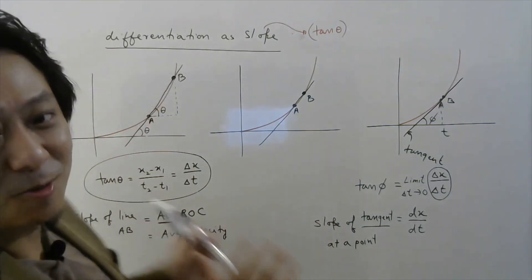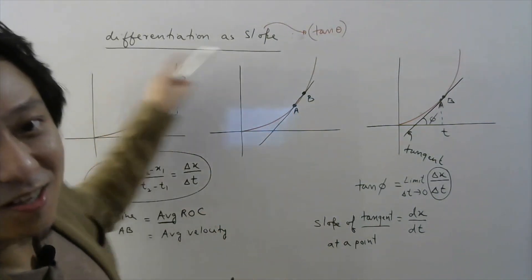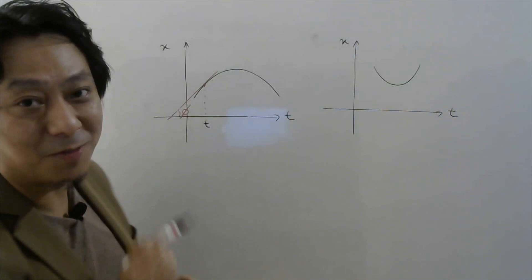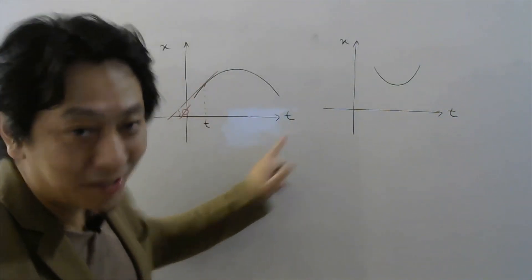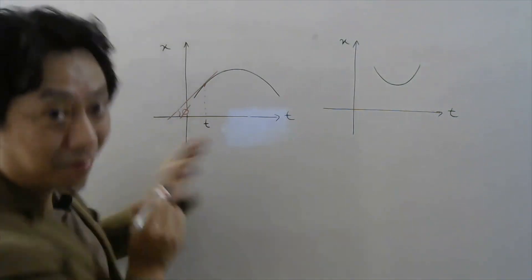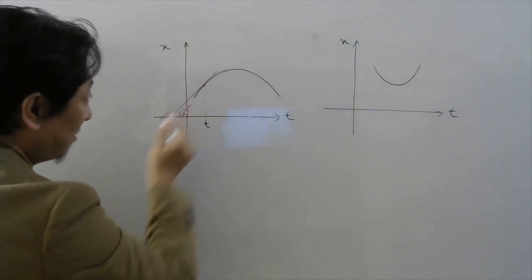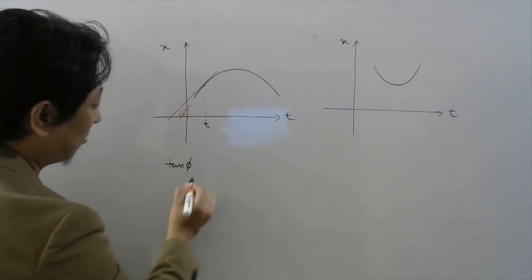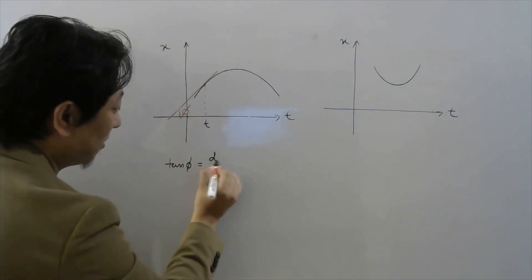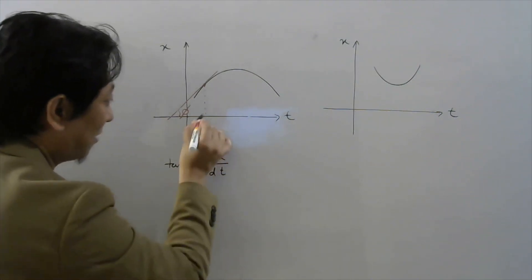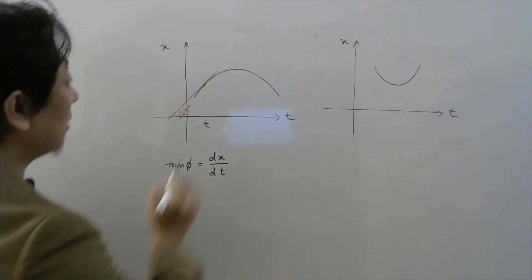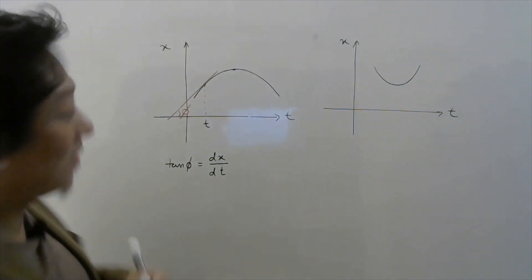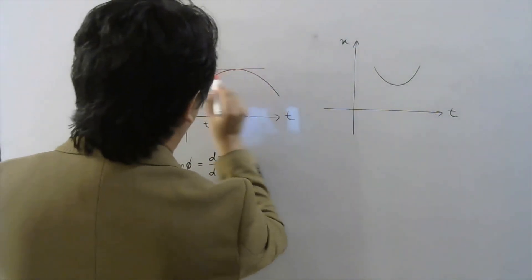Try to remember these two basic things about differentiation as a slope. If you want dx by dt — differentiation of x with respect to t — at a specific time t, graphically you draw a tangent at that point and calculate tan phi. So tan phi at that moment gives you the rate of change dx by dt. What if I ask at this point — the maximum point? Well, at that point if you try to draw a tangent, you will realize it will be parallel to the x-axis.